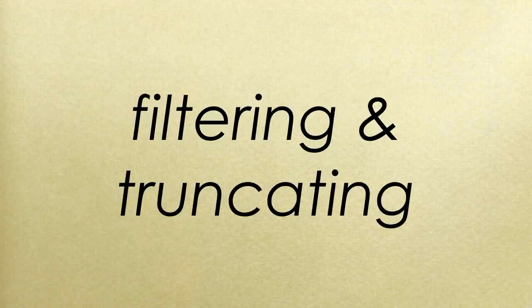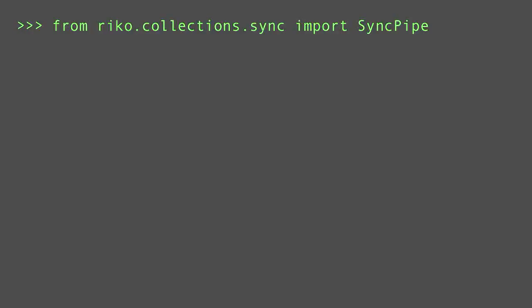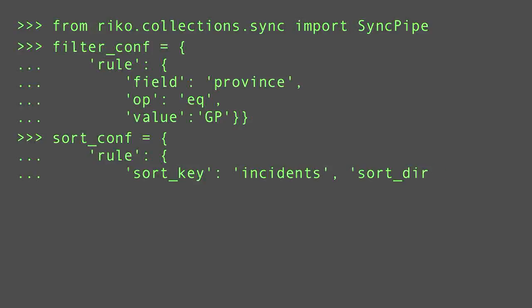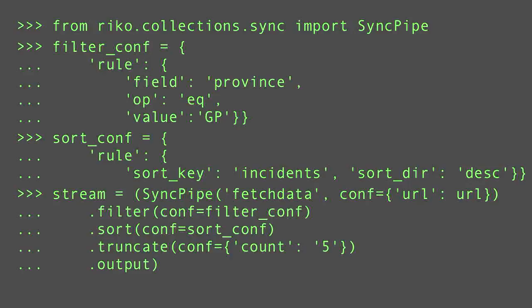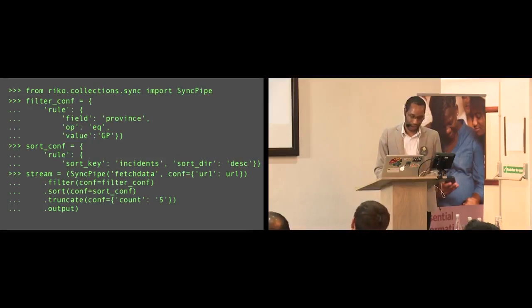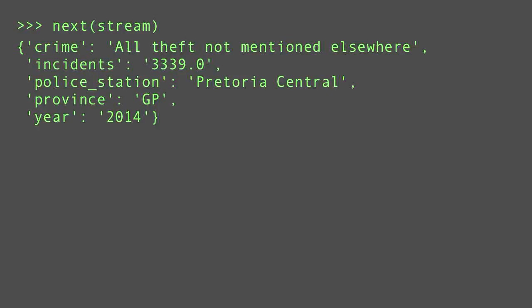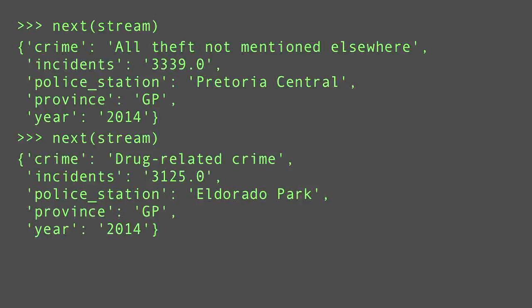Now I'll show a couple of different things we can do — first, how you can filter and truncate. Since we're doing method chaining, we're importing the SyncPype class. First you have your filter configuration — here you just want to filter where the province is GP. Then you're going to sort it, and you want to sort it by the number of incidents. You have SyncPype, it's fetch data which is a module that handles JSON, the configuration with the URL, then the filter configuration, and for truncating you just want the top five. What you get back is the stream. You can see the first result is 'all theft not mentioned elsewhere' — over 3,000 incidents. Then you call next again, and you can see the number of incidents is slightly lower. So it works as expected.